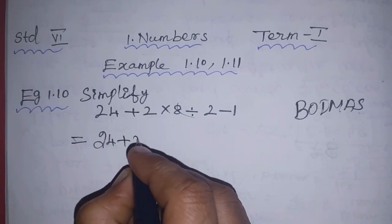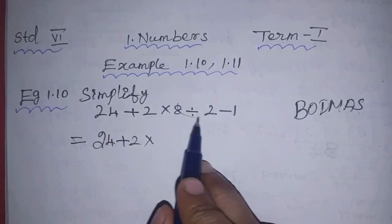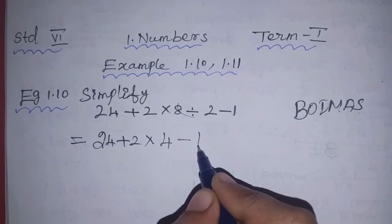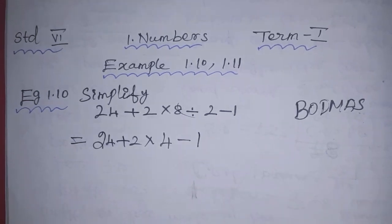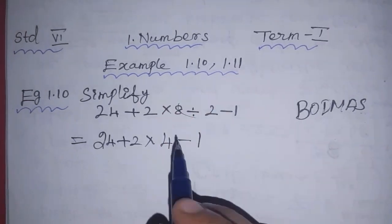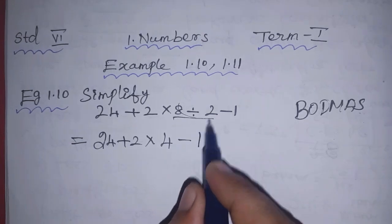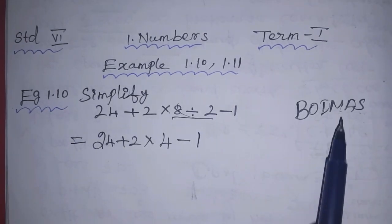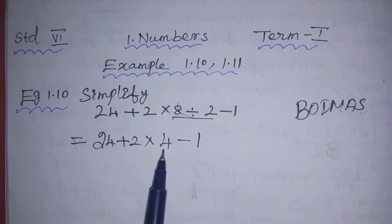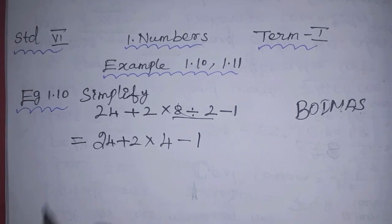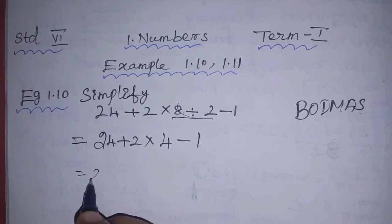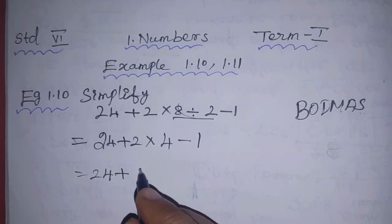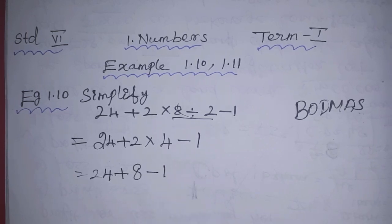So: 24 plus 2 into (8 divided by 2) gives 4, minus 1. We finish the division first. Next, we do multiplication: 2 into 4 is 8. So we have 24 plus 8, minus 1.